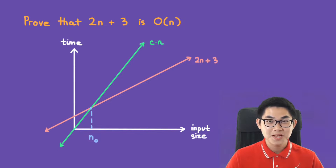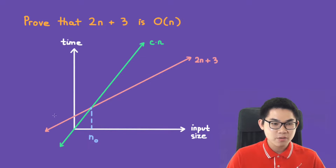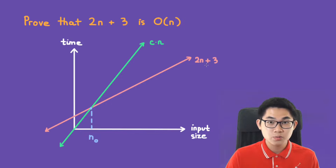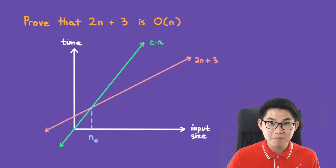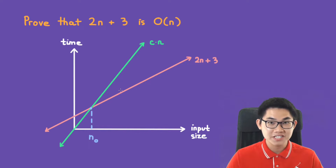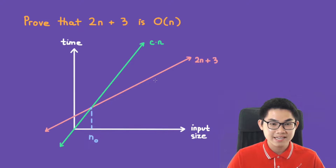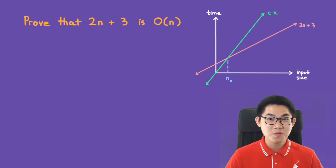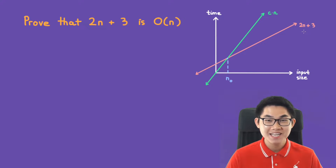It's very important to understand what they want you to do. Here we have a graph — the x-axis is the input size and the y-axis is basically the time. Here we have our function 2n plus 3, and when they want you to prove that it is O(n), we just want to show that there is a function c times n, where c is just a number that grows faster than our red line. All we have to do is find one function c times n that grows faster. The intersection point is called n naught. You might wonder: can we just pick c to be 3? The answer is yes, but there is a standard way to find c.